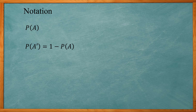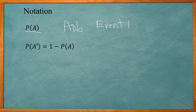When you see P(A), that signifies the probability of event A. So whatever event A is — it might be rolling a certain number on a die, or pulling a card out of a deck of cards — any kind of event like that.